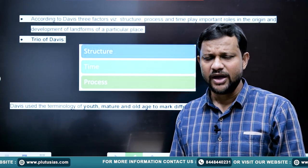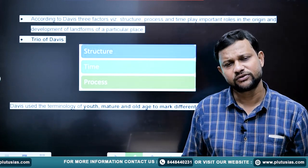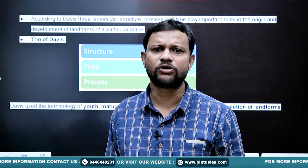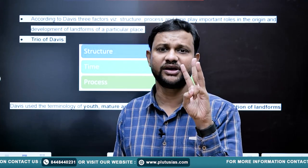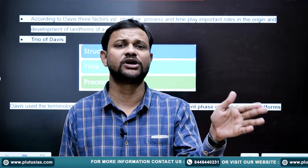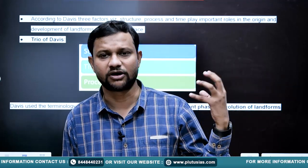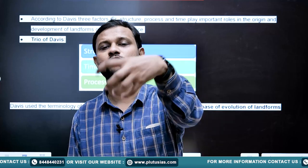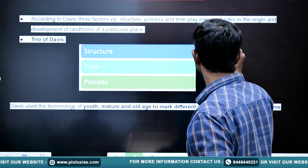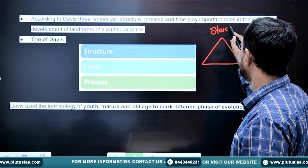In order to explain his concept further, Davis used a triad — three key ingredients that define the process and transformation from the youthful to the old stage. A landform shall experience differential processes throughout. These three elements of Davis's triad are: structure, process, and time.